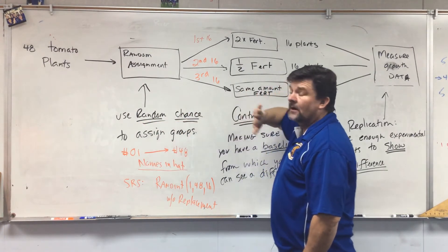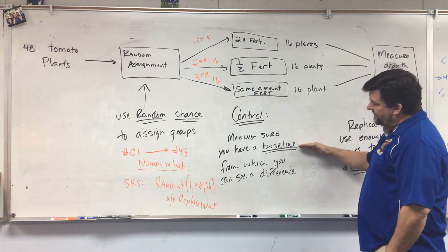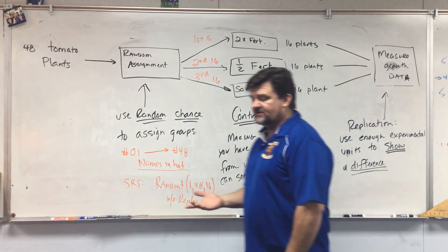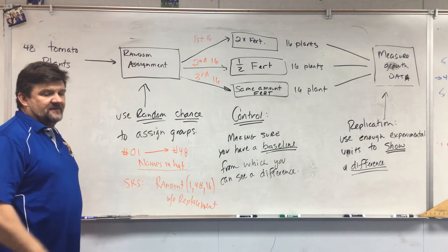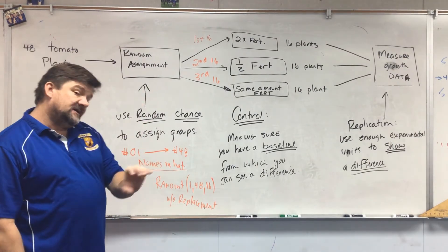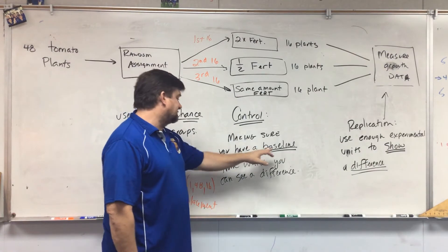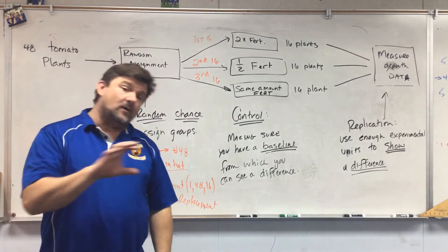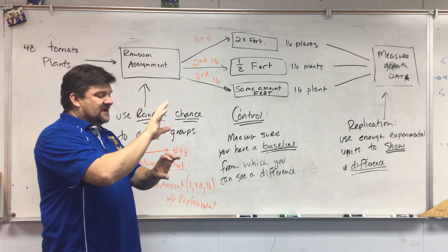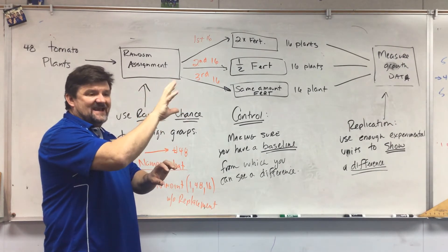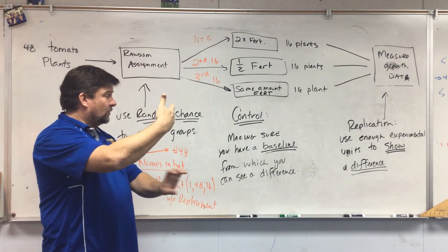The next idea is control — making sure you have a baseline from which you can see a difference. A lot of people think of control like in a vaccine study: people who get the vaccine and people who don't. The people who don't get the vaccine are the control group. The reason it's a control group is to establish a baseline so you can see a difference — whether the vaccinated group gets as sick or gets the flu as often as the control group.